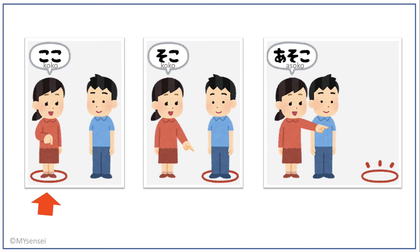There are three images here. Koko means 'here,' near me. Soko means 'there,' near the other party. And asoko means 'over there,' away from both parties.